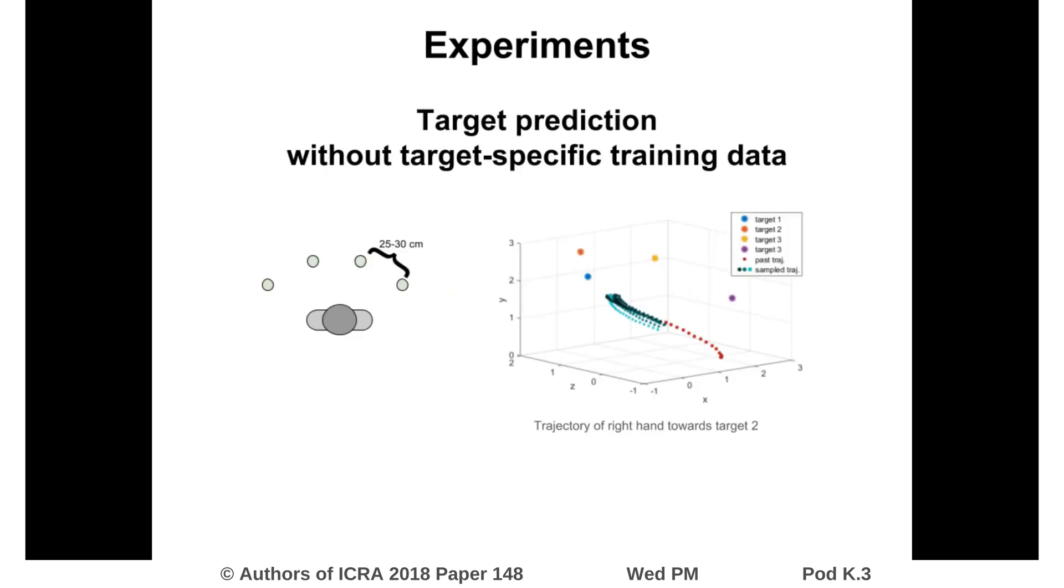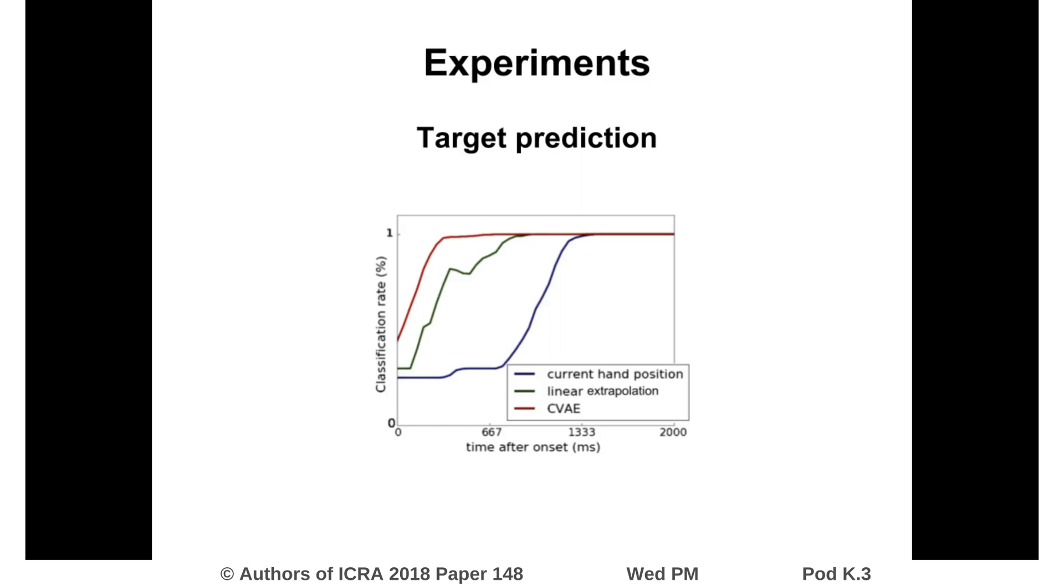Next, we test online target prediction by using sample trajectories to infer one of four targets. With our model, we are able to infer the target within 500 milliseconds, while using a linear extrapolation or the current hand position take more time.